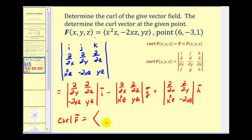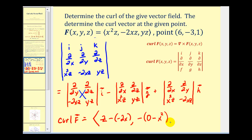To determine the x component of the curl: take the partial derivative of yz with respect to y, which gives z, minus the partial derivative of negative two xz with respect to z, which gives minus negative two x. For the y component: the partial derivative of yz with respect to x is zero, minus the partial derivative of x squared z with respect to z, which is x squared. For the z component: the partial derivative of negative two xz with respect to x is negative two z, minus the partial derivative of x squared z with respect to y, which is zero.